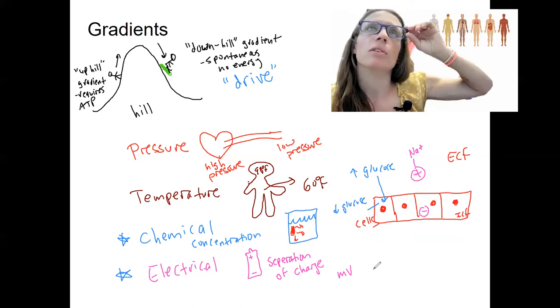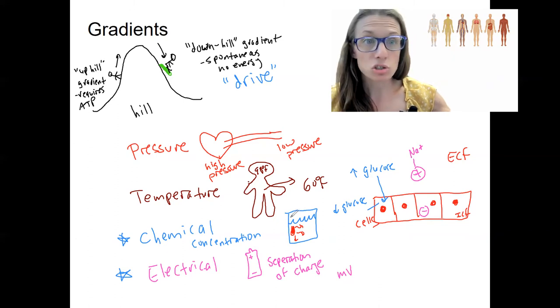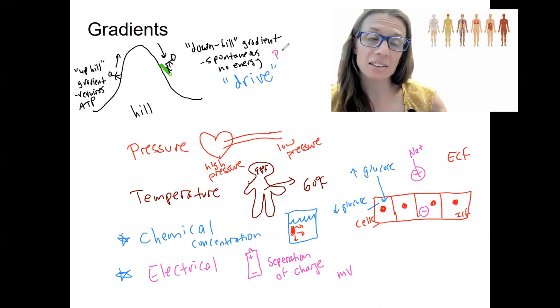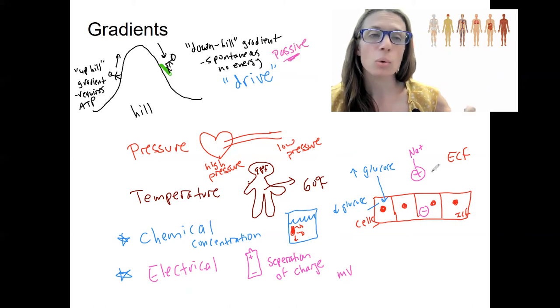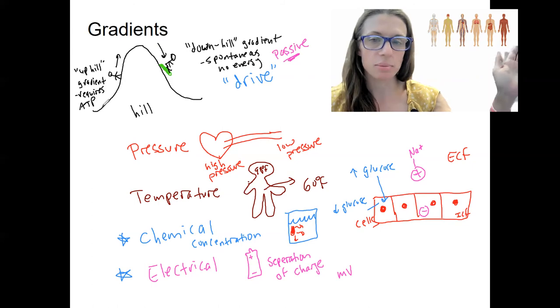But that, if you can get the idea of what this means to be uphill versus downhill, when something would have the drive to be able to move, move passively, right? Another word for spontaneous, it's passive. When something can move passively without more energy input versus when does it require ATP? When is it active? Does it require some energy input directly? If you can get that, it'll really help. And we'll see it a lot.